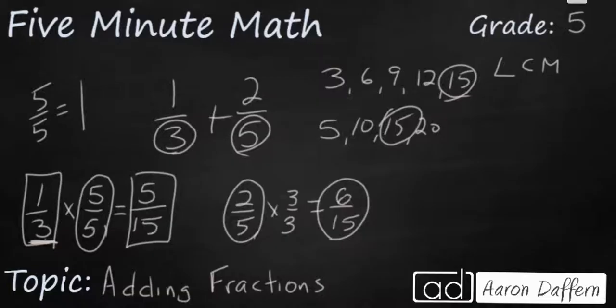You notice I now have two fractions that work. I renamed my one-third as five-fifteenths and my two-fifths as six-fifteenths. When we're adding fractions, if your denominators are the same, then you can add across. The denominator stays the same—you're simply adding the numerators. Five-fifteenths and six-fifteenths is going to equal eleven-fifteenths. That is your answer.